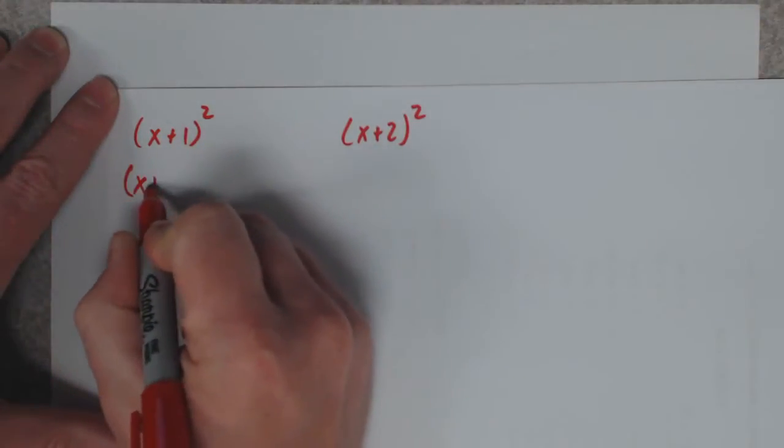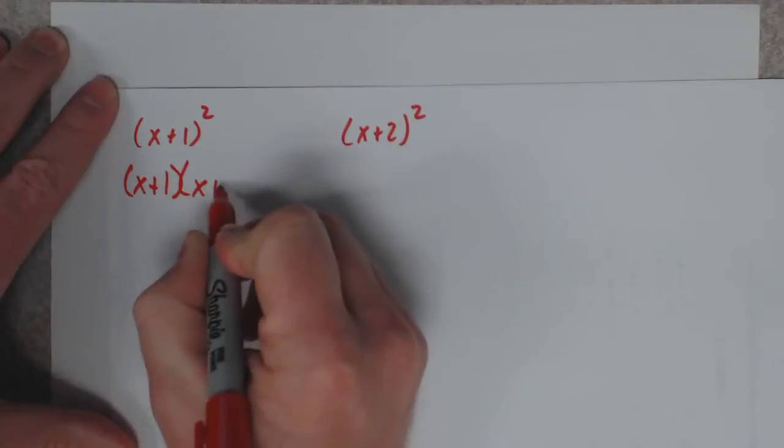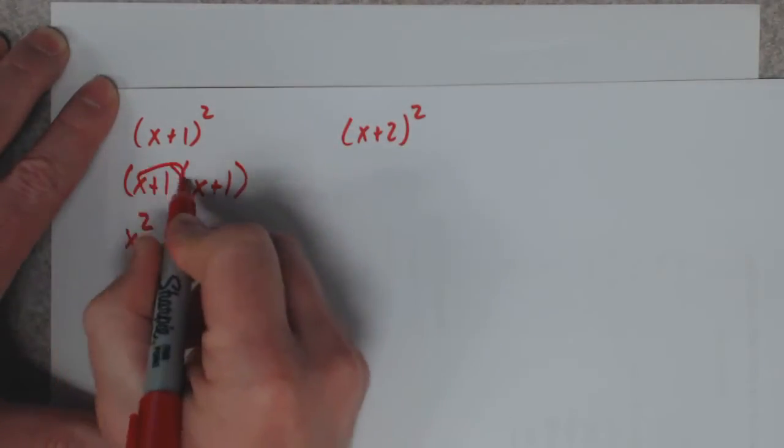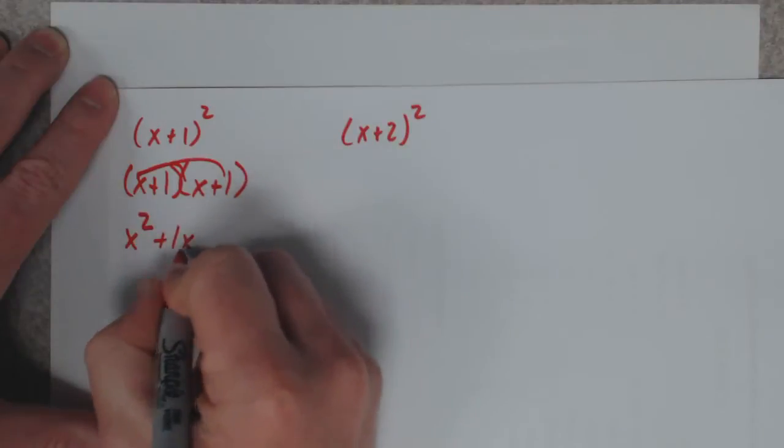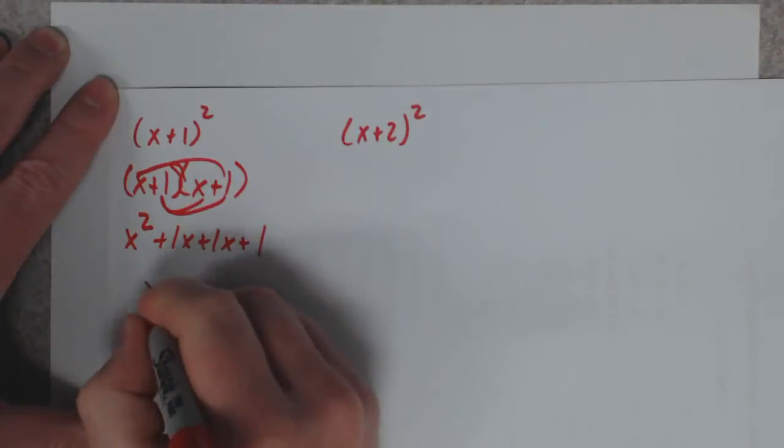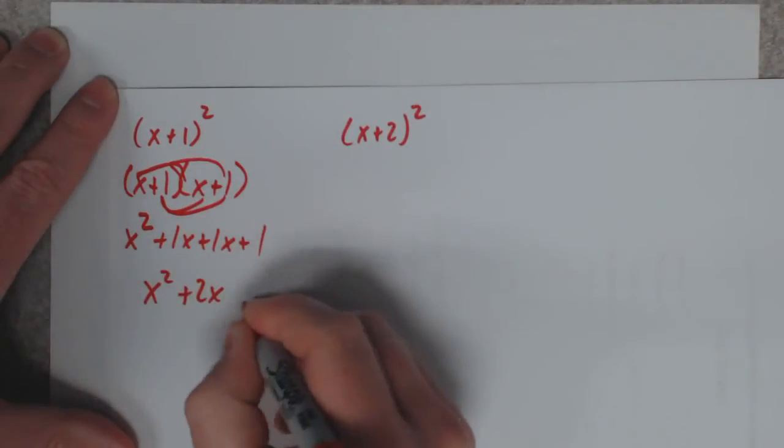I'm going to show this once, the drawn out version, and then I'll show you a shortcut for it. x times x is x squared, x times 1 is 1x, 1 times x is 1x, 1 times 1 is 1. x squared plus 2x plus 1.